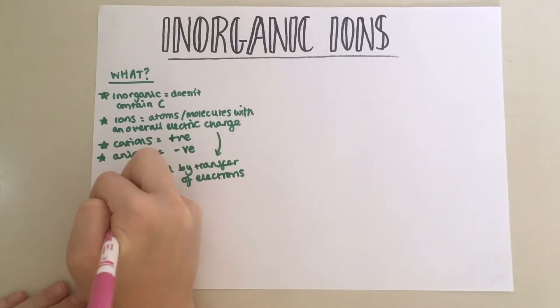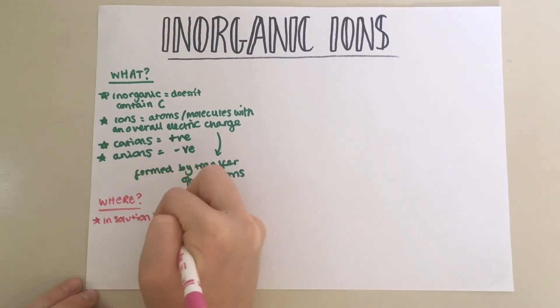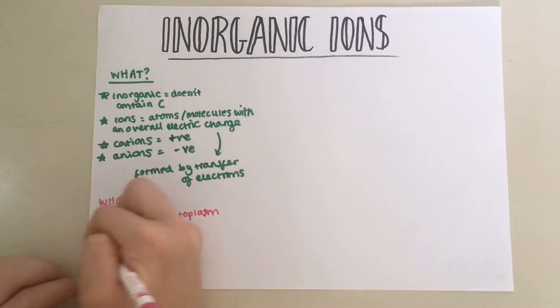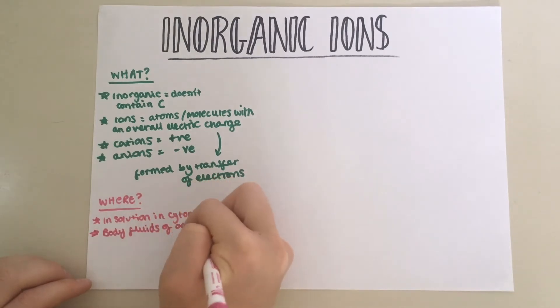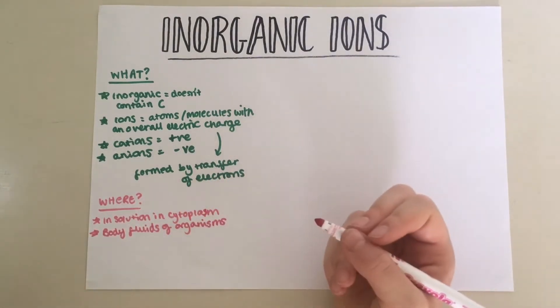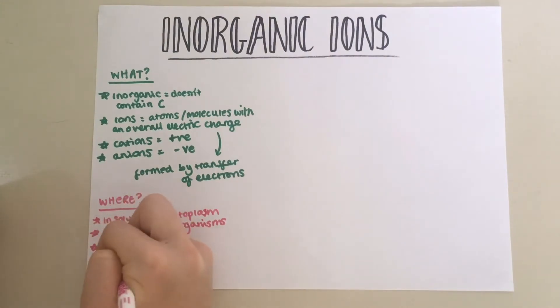Now let's consider where inorganic ions are found. Inorganic ions can be found in solution in the cytoplasm, but they can also be found in the body fluids of organisms, for example in the blood or the lymph. Inorganic ions can be found in both high or low concentrations, and they can be found in living things but also in non-living situations.